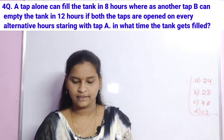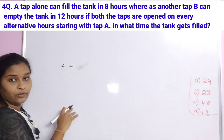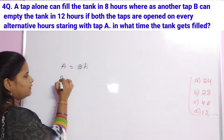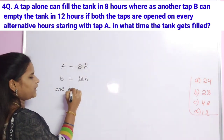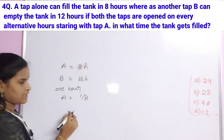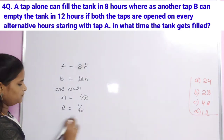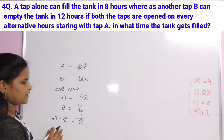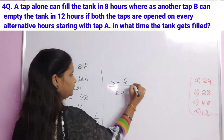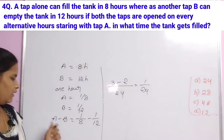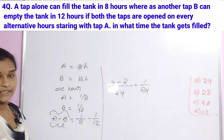To calculate the fill time with alternating taps: A fills 1/8 per hour; B empties 1/12 per hour. So A minus B for 2 alternating hours: 1/8 minus 1/12. LCM of 8 and 12 is 24, giving 3 minus 2 over 24 equals 1/24 per 2-hour cycle. This pattern repeats every 2 hours.